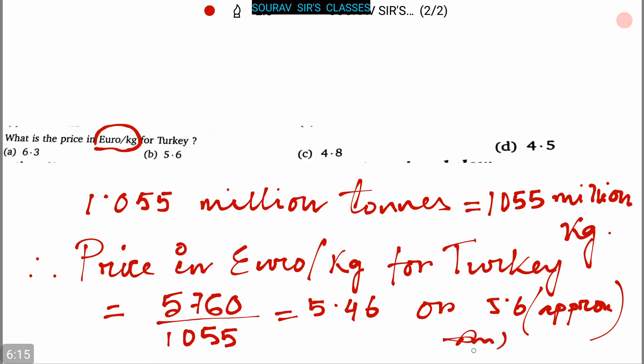So here option B, that is 5.6, is the correct one. But 5.6 is the price in euro per kg for Turkey.